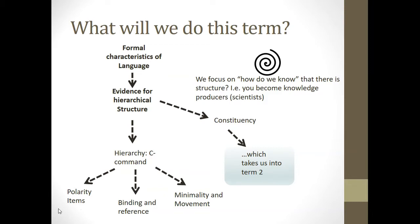What we're going to be looking at now is evidence for constituency, which you would have covered in linguistics one — so there's a little element of recap, but the textbook also goes into a lot more detail, as will we. There are also a number of recommended readings for this week, primarily from the prescribed reading, Hagemann. There are some other helpful readings, two of which might not be available through the library, but they also point you to more of the Hagemann readings.